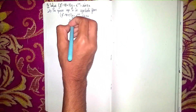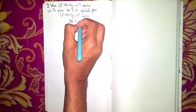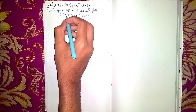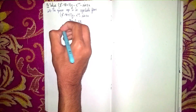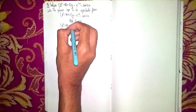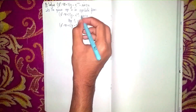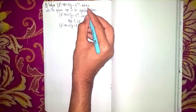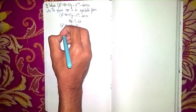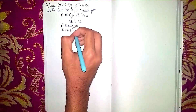Step one: find the complementary function. For the complementary function, I take the LHS side. D² - 4D + 3 into y, and consider the RHS as zero. In the complementary function, we don't consider the RHS — we set it to zero. So it becomes D² - 4D + 3 = 0.